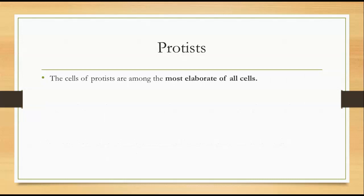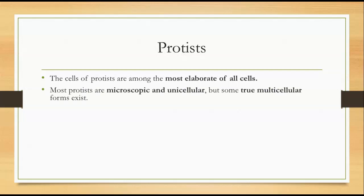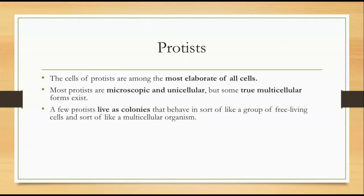The cells of protists are, surprisingly, among the most elaborate of all cells. You might think they're very small, tiny, microscopic organisms and can't be that elaborate, but they actually are. Most protists are microscopic and unicellular, but there are some true multicellular forms. A few protists actually live as colonies that behave sort of like a group of free-living cells and sort of like a multicellular organism, but it's actually a bunch of small, single-celled organisms.